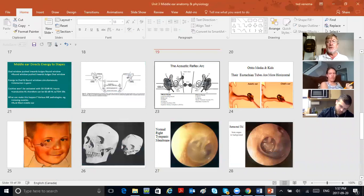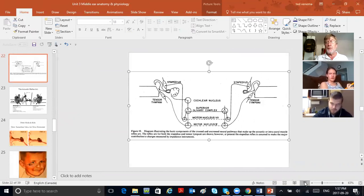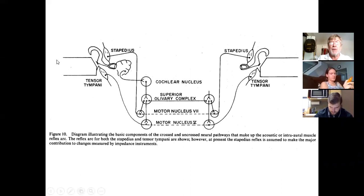Looking at the acoustic reflex diagram: starting from the left — ear canal, eardrum, middle ear bones — malleus, incus, stapes — and then this beehive-shaped thing, that's supposedly a cochlea. Then you go to the brainstem, between your ears, which is the spinal cord inside your skull. And then you're looking at the other ear.